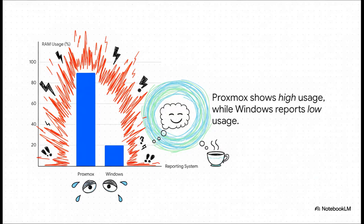This is the moment of panic. You look at your Proxmox dashboard, it's glowing red, screaming that 90% of your RAM is completely maxed out. It feels like the whole system is about to fall over. But then you pop open the Windows VM, and Task Manager is just chilling, reporting maybe 20% usage. It's totally calm. So, what gives?